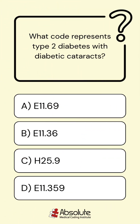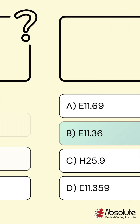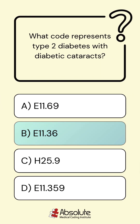What code represents type 2 diabetes with diabetic cataracts? A. E11.69, B. E11.36, C. H25.9, D. E11.359. The answer is B. E11.36.